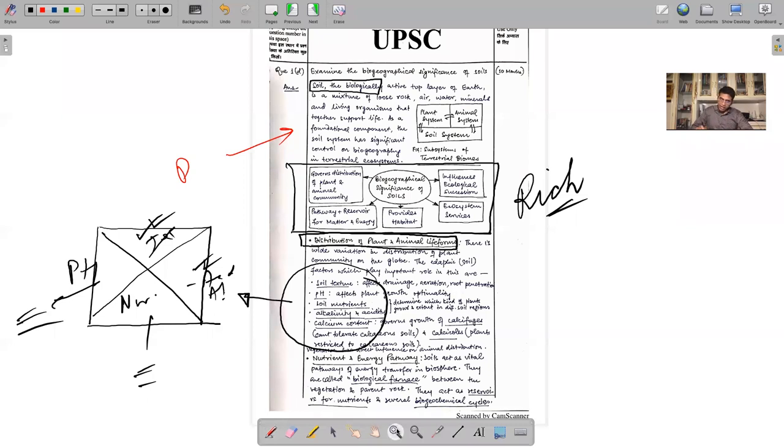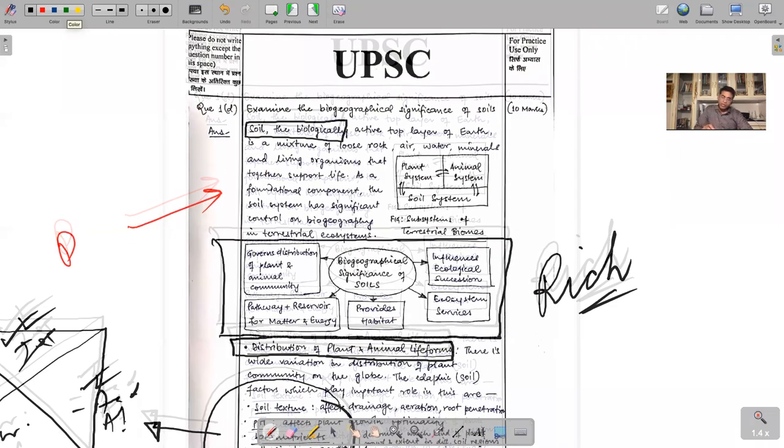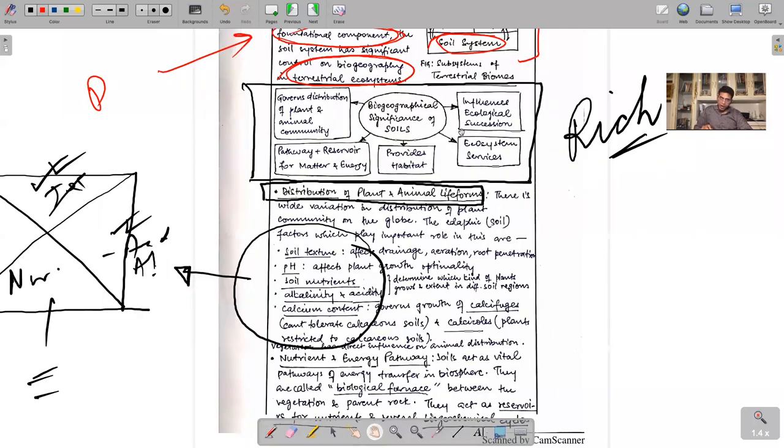In terms of content, it's very nice content. Soils are biologically active topsoils, mixture of loose rock, water, minerals, life forms. They are foundation components important for biogeography and terrestrial ecosystems. These are the keywords - a nice way of showing they're all related to the soil system. How is soil important? It decides distribution of plants and animals.